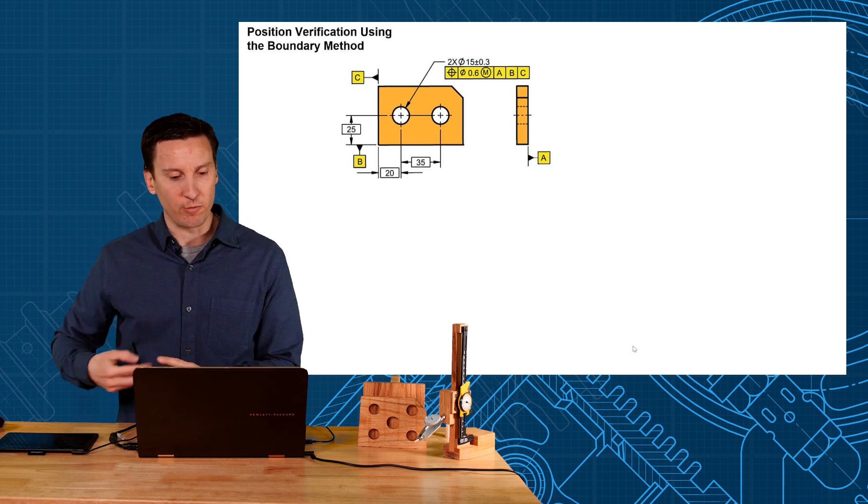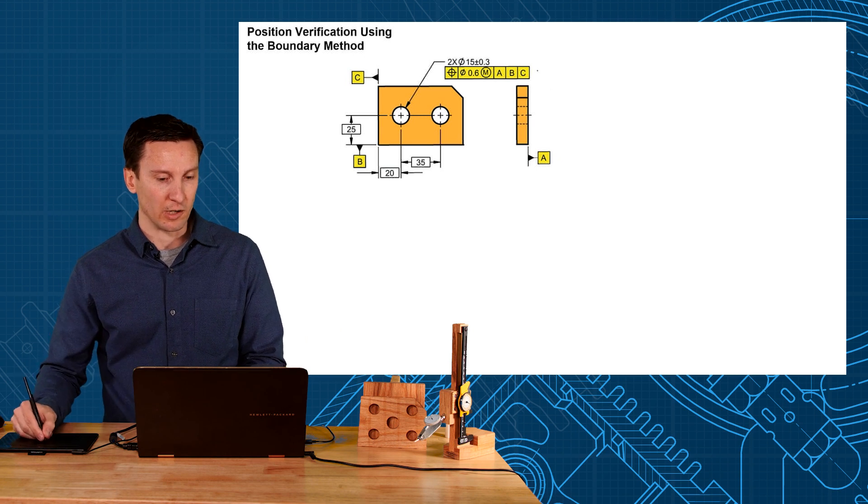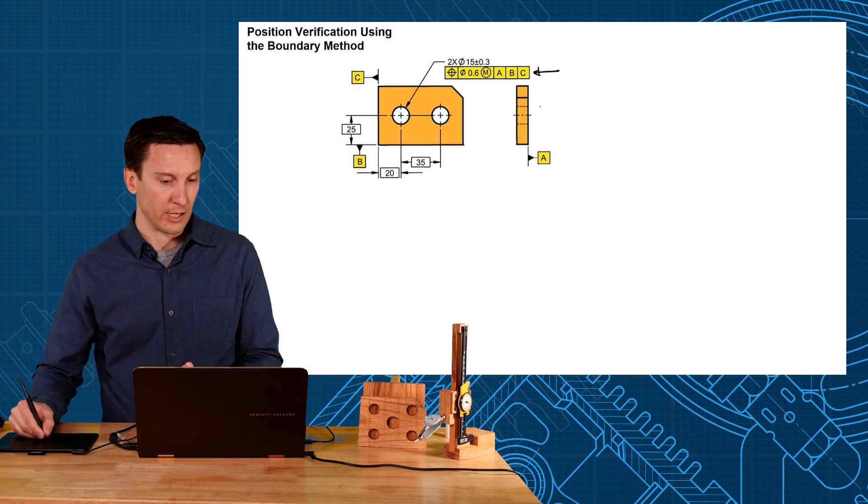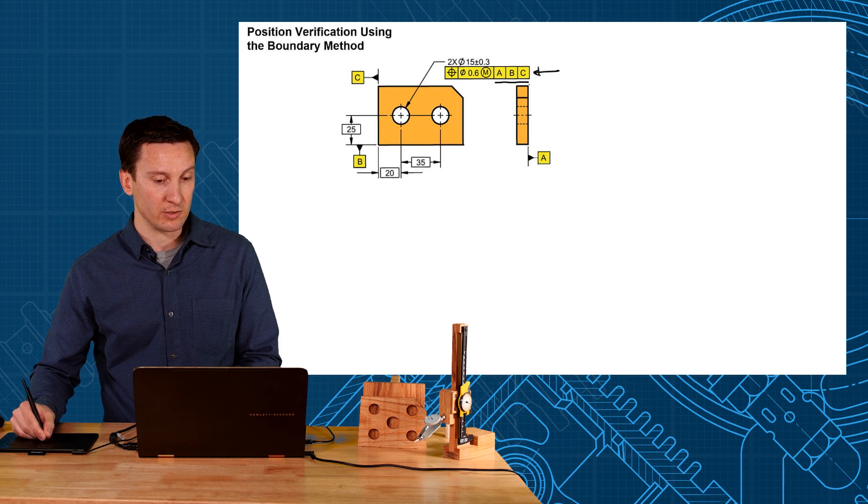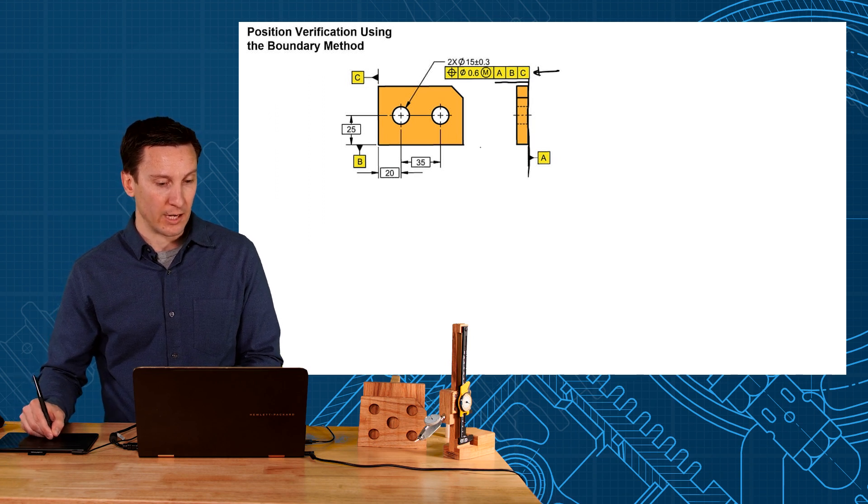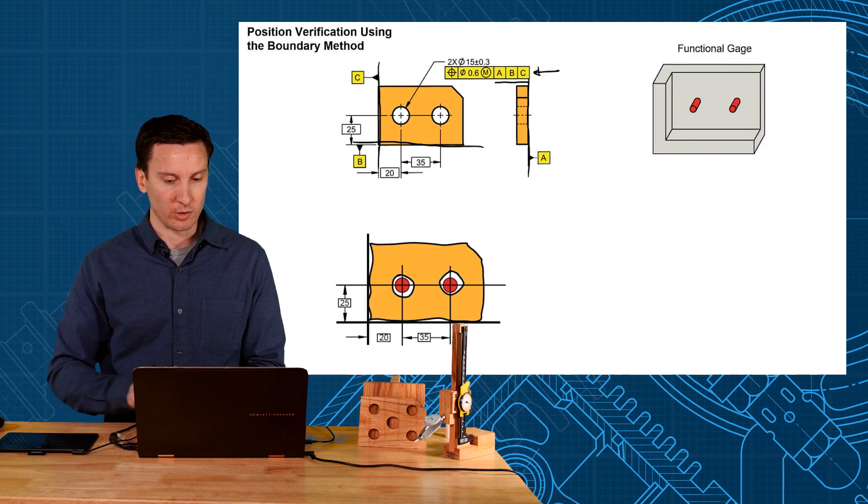So how would we build a functional gauge to check this position tolerance here? Well the gauge would need the datums on there because it has a position tolerance to ABC. You need a gauge that would mount to A, that would mount to B, and would mount to C. It would look like this.